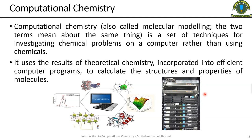What is computational chemistry? Computational chemistry is a set of techniques for investigating chemical problems on a computer rather than using chemicals. It is a branch in which you use computer programs to solve chemical problems.